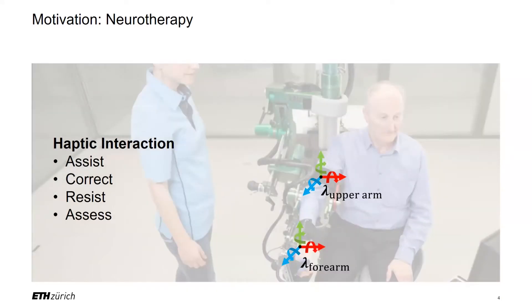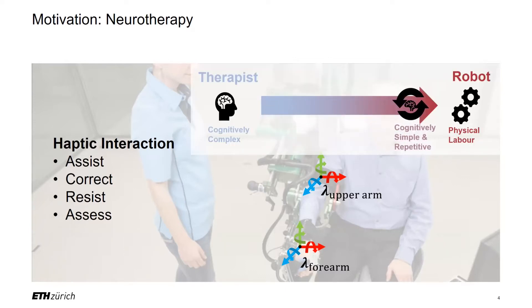Robots can be used to take over the haptic interaction with the patient. While the robot takes care of the physical labor and the simple cognitive tasks, the therapist gains more capacity for the cognitively complex tasks. Therapists are very good in applying precise forces on the patient's arm to correct or assist movements that are governed by the patient. Except for the desired interaction forces, they behave haptically transparent.